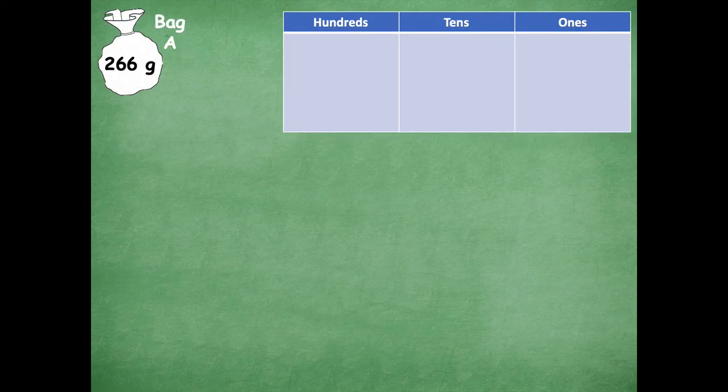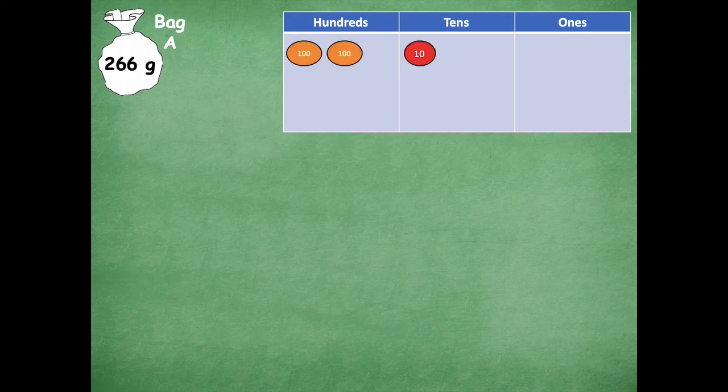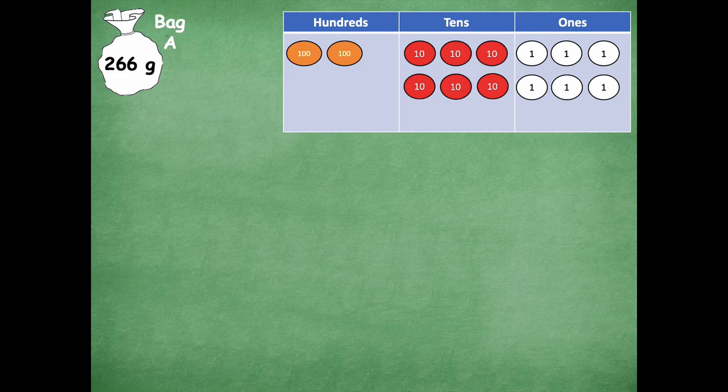So let's jump in and get started. I have some bags of beans and bag A weighs 266 grams. So I want to model that on my place value chart. So I have two hundreds, six tens, and six ones. So that is 266 grams modeled on my place value chart.